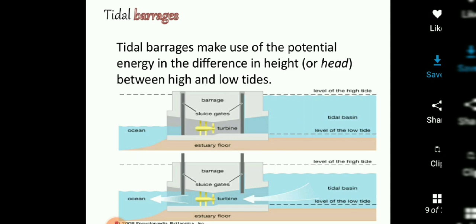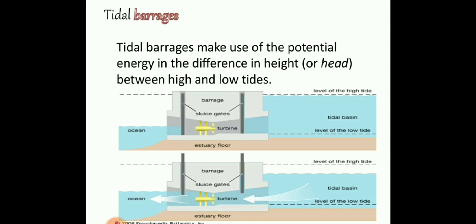The height difference represents potential energy. When there is a high tide above the water level compared to the ocean side, that potential energy can be converted to electrical energy.